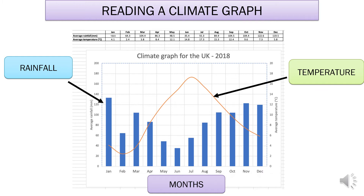An easy way to remember it is: line is temperature, rainfall is bar. Normally it's easy because the bars are blue and the temperature line is red — you can remember this because rain is often shown in pictures as blue.